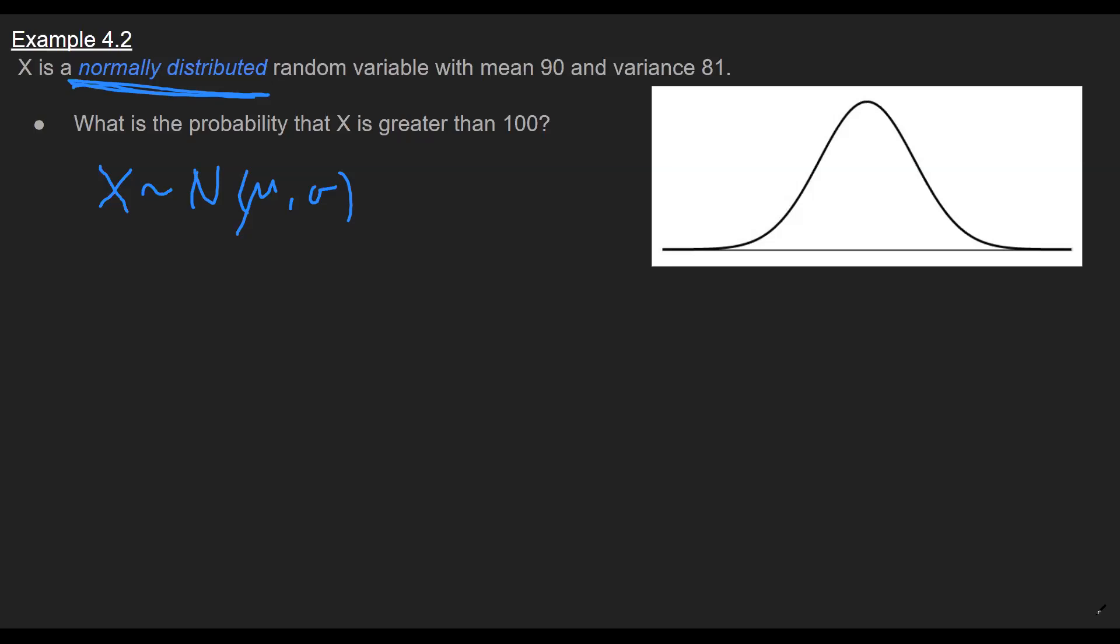So the first thing I'm going to notice is the problem tries to trick us a little bit by giving us the variance here. So the symbol for variance is sigma squared, that's 81. So simply taking the square root, I am able to find sigma.